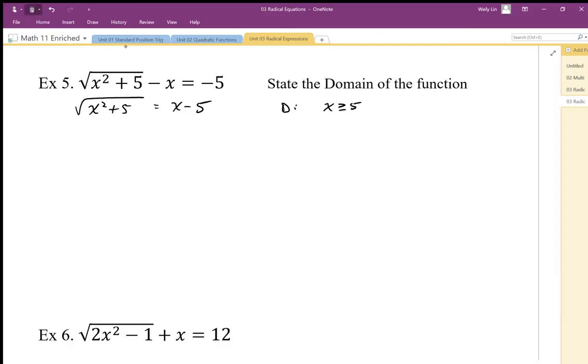We're going to undo the square root by squaring both sides, and then I'm going to end up with x squared plus 5 equals x squared minus 10x plus 25.